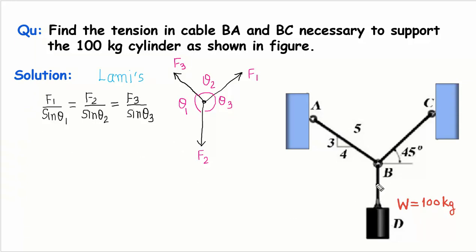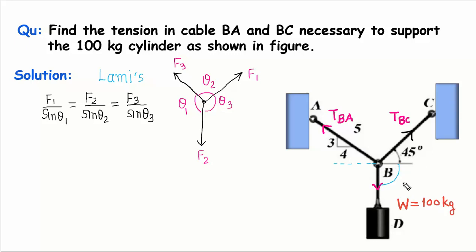So here I am going to follow the same condition. First of all, the tension in cable BC I will call tension BC, and the tension in cable AB I will call tension AB or BA. The tension in the vertical segment is equal to the weight W. So these three forces are keeping each other in equilibrium condition. Now, this angle is given as 45 degrees, and since this is a horizontal line and this is a vertical line, this angle is going to be 90 degrees.